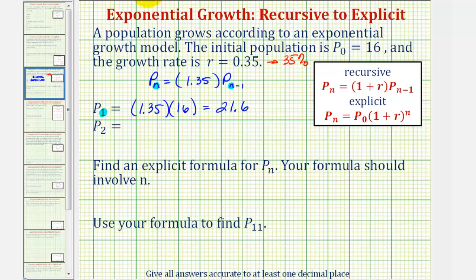When we find p sub two, n equals two. We have 1.35 times p sub two minus one, that's p sub one, which we just found, that equals 21.6.